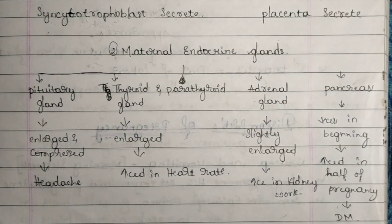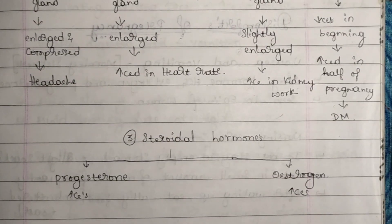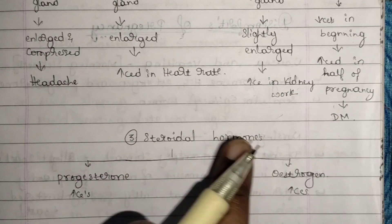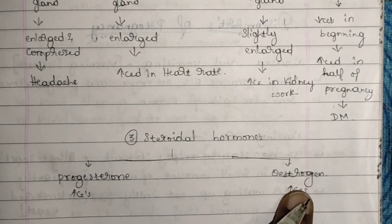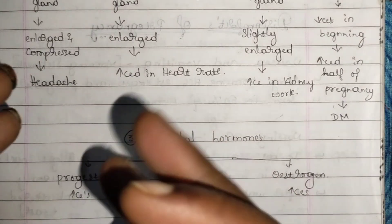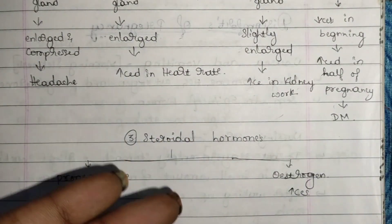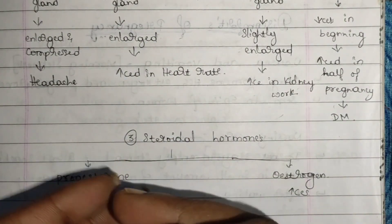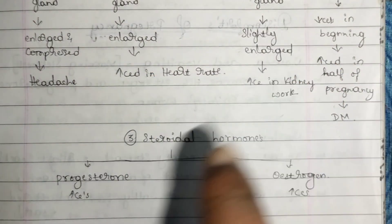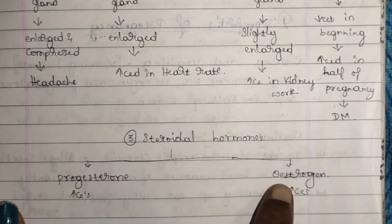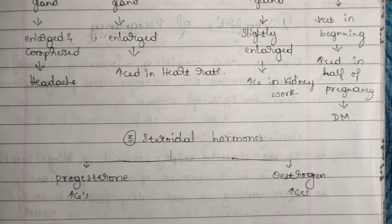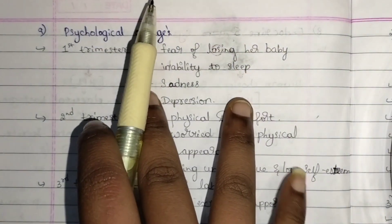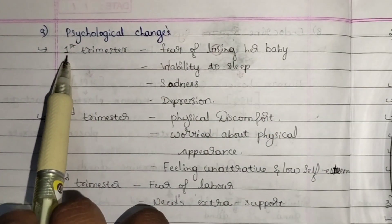Next, steroidal hormones. Steroidal hormones are nothing but progesterone and estrogen. Both of these will be at an increased level and will be maintained at that increased level throughout the pregnancy. Once these two values fall down, menstruation occurs.